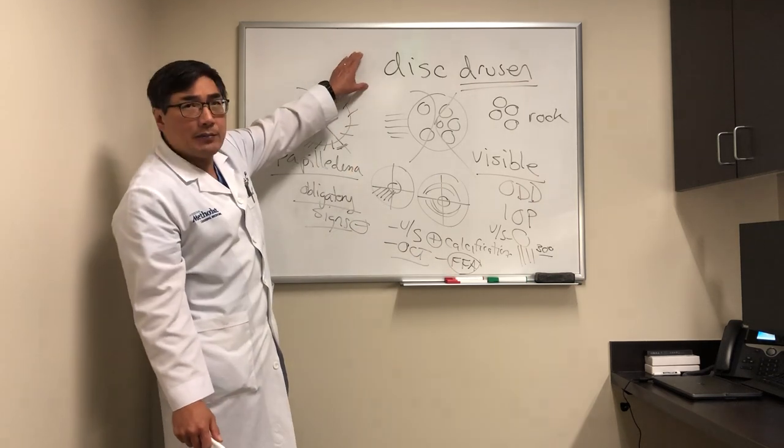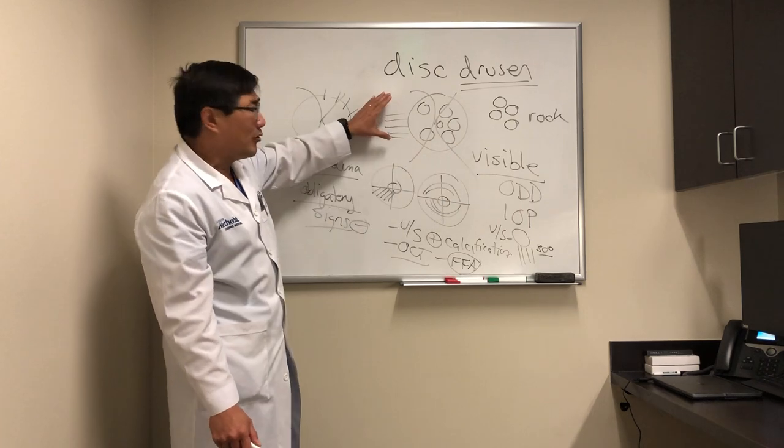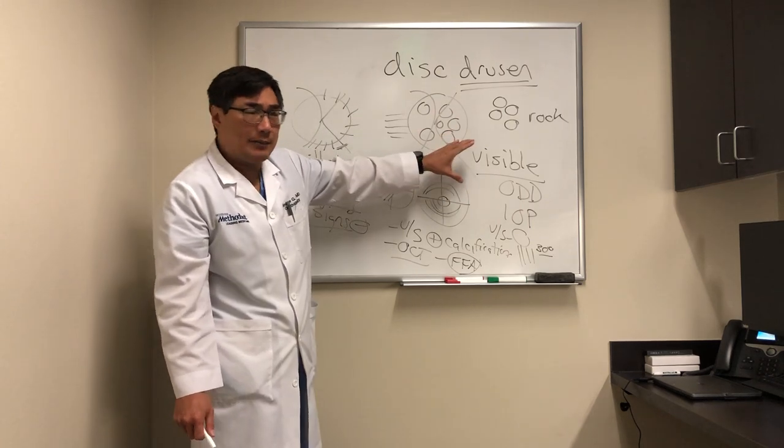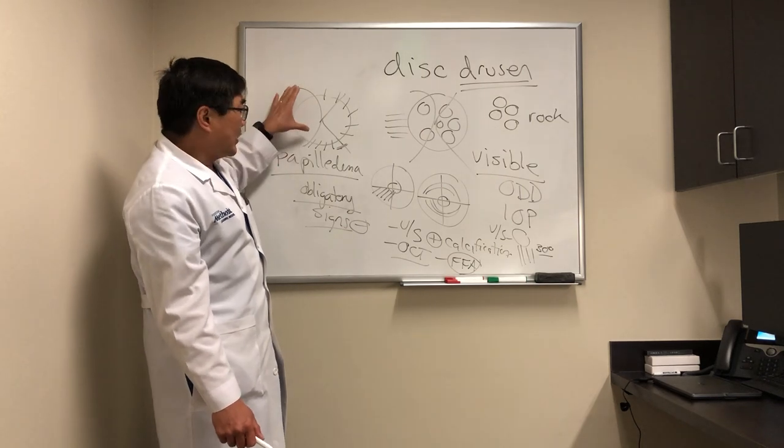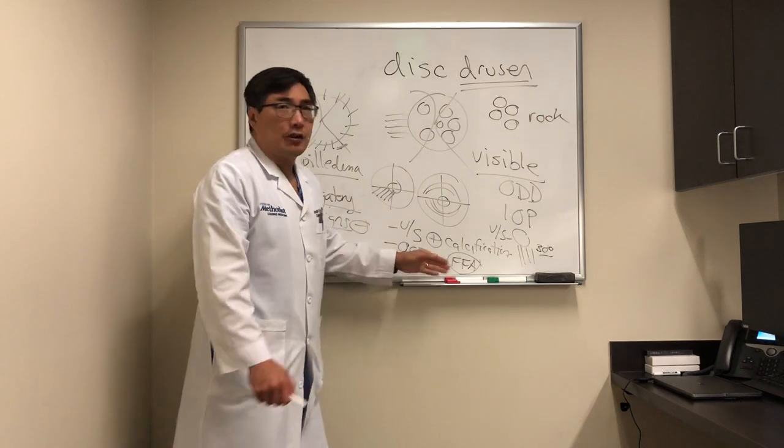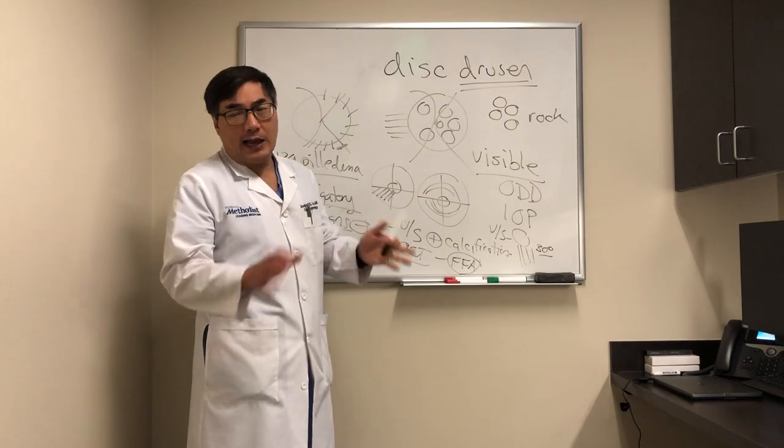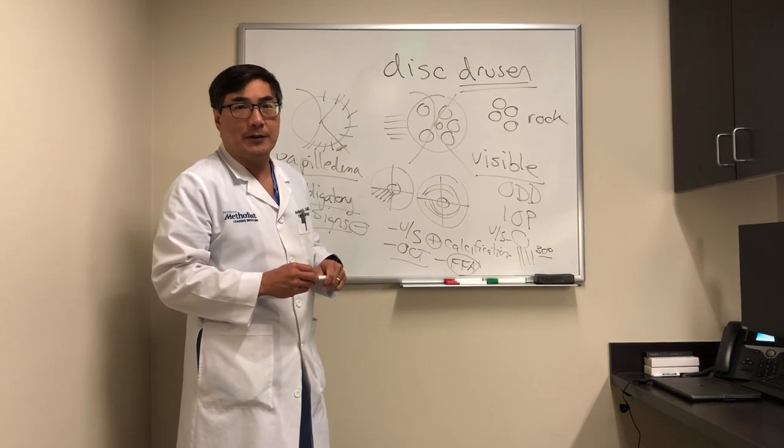So you need to know a little bit about disc drusen, it causes peripheral field loss, not central loss, it's slowly progressive, it's benign, it doesn't need imaging. If you see obligatory signs of papilledema, then you should work that up. If you're unsure, you should work it up as papilledema. Ultrasound, OCT and fundus fluorescein are all adjunctive tests that help us differentiate these different conditions from true papilledema.